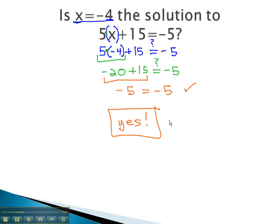x = -4 is the solution to 5x + 15 = -5. In other words, -4 is the value that makes this equation true. It is the only number you can plug in for x that makes it a true equation. No other number works.